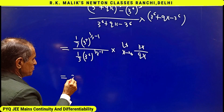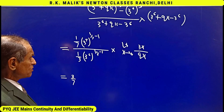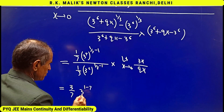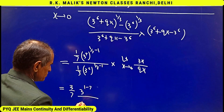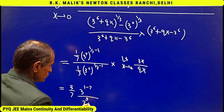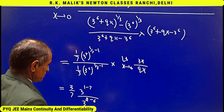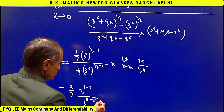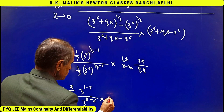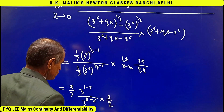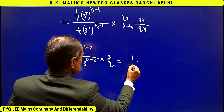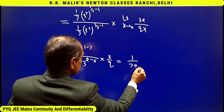Applying the standard limit formula, this simplifies to: (3/7) times (3 to the power 1/7) upon (3 to the power 2 minus 6) times (3 by q), which equals 1/(7q).